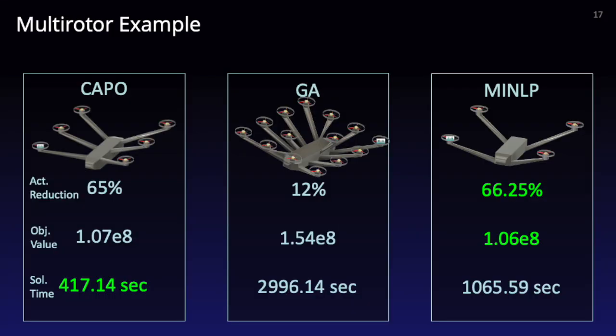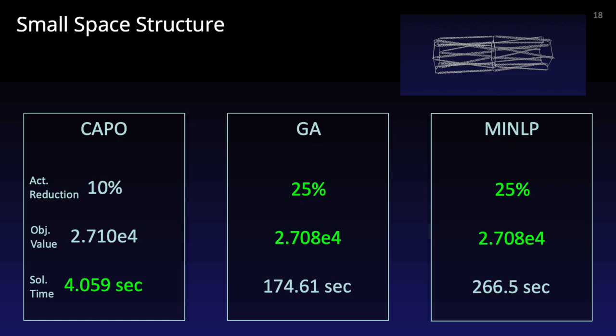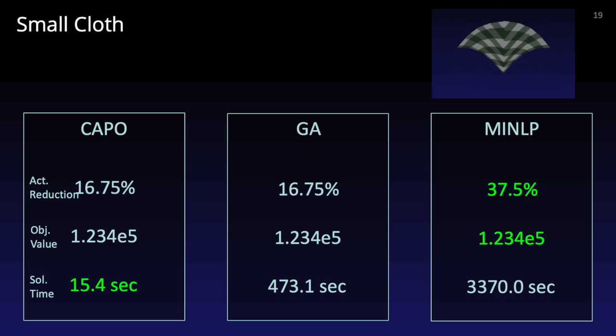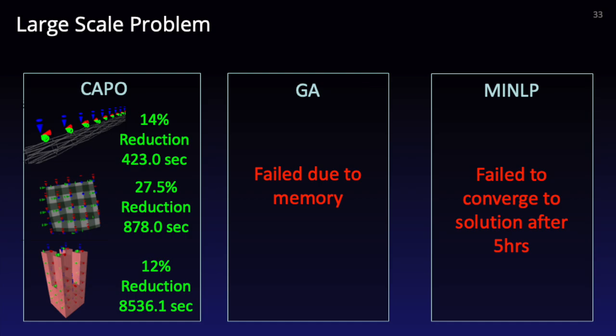On the small-scale design problems, CAPO finds a comparable solution that minimizes the objective function in significantly less time with an average of 2 to 218 times faster. CAPO has additionally demonstrated on three large-scale problems that the other methods failed to solve.